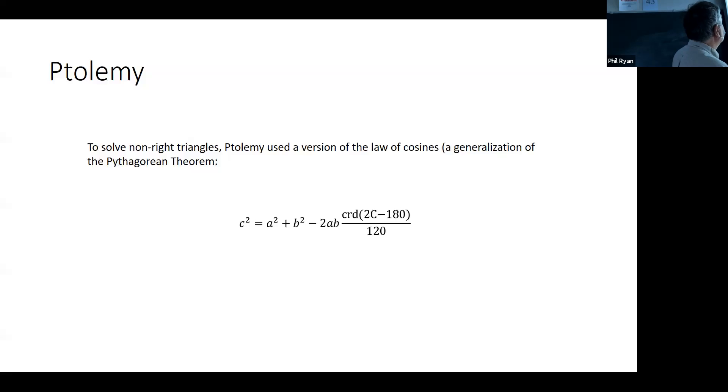What Ptolemy did was he used a version that, if you write it in modern terms, looks a little bit like the law of cosines. The law of cosines is a generalization of the Pythagorean theorem, so it's natural they would find it. The way you prove the law of cosines, you take a general triangle and cut it up into two right triangles. Do some math and you come up with the law of cosines. That's how Ptolemy solved right triangles.